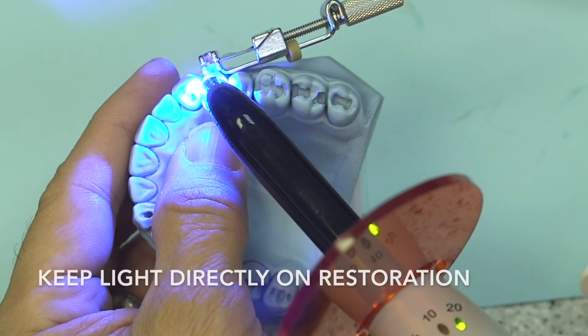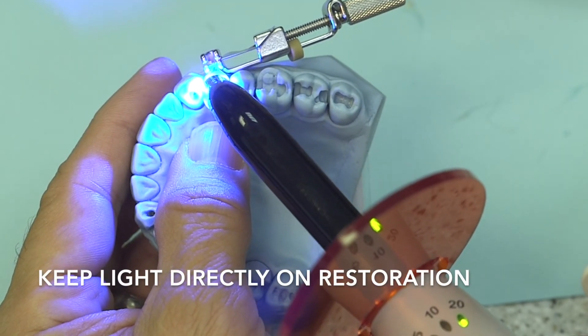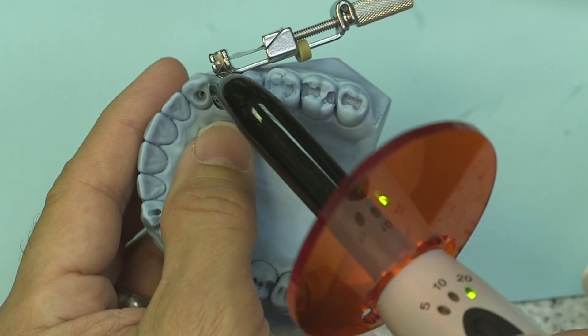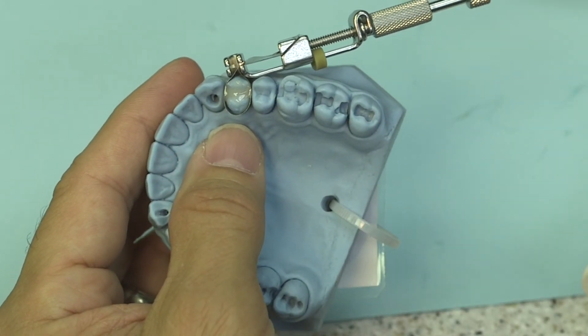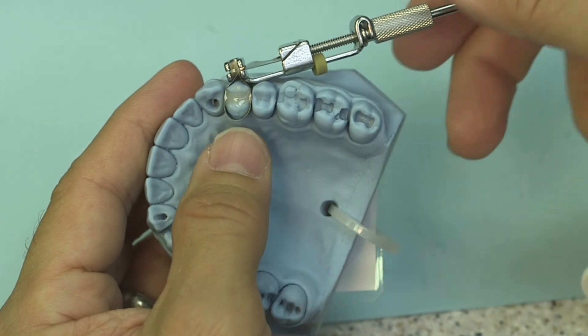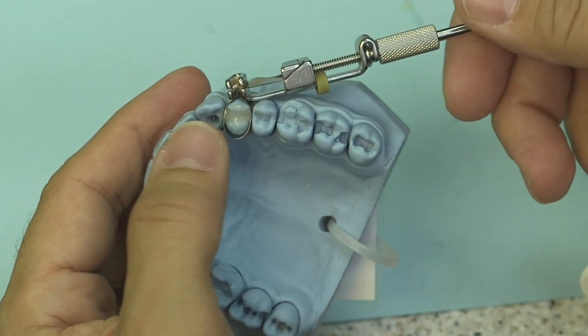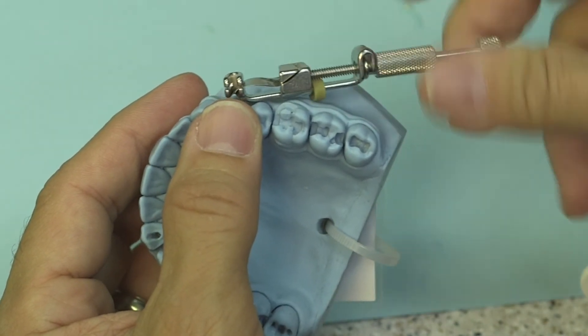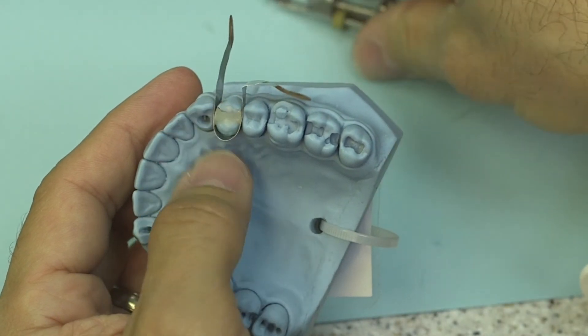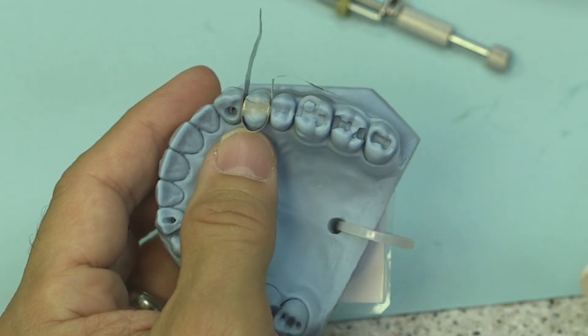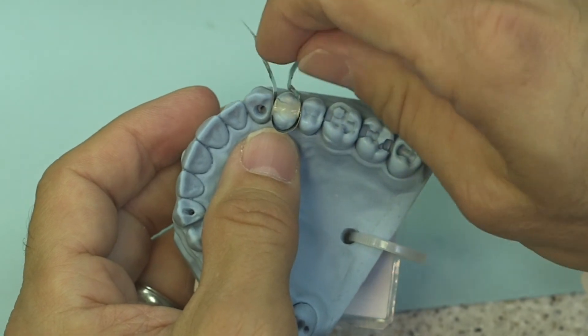Also make sure to keep your light directly on the restoration and if you can possibly watch where your light is aimed, that's another component that's been a big problem. Some studies have shown by Richard Price at Dalhousie University that if you do not aim the light properly you're not going to get a good cure, so it's important for you to consider that.